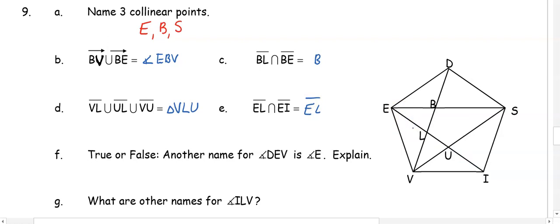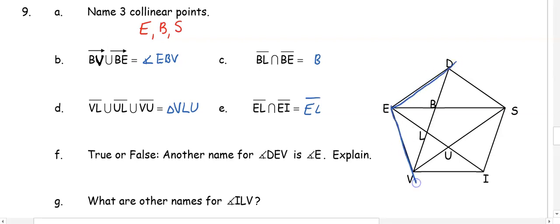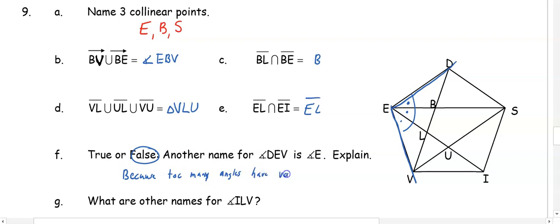In part E, segment EL intersecting segment EI — the place they overlap is segment EL. In part F, true or false: another name for angle DEV is angle E? Angle DEV is this angle, but we cannot call it just angle E because there are four angles at that vertex. So it is false — too many angles share vertex E, so we can't name it with just one letter.